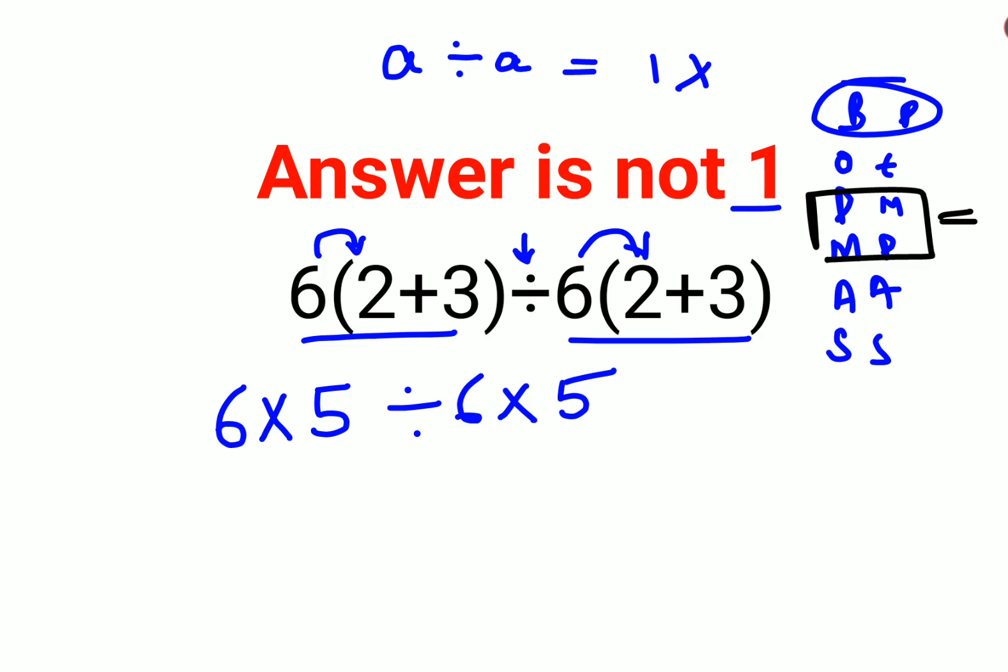In this case with multiplication and division, go from left to right. First we'll do 6×5, which is 30, divided by 6, and keep the rest as it is.